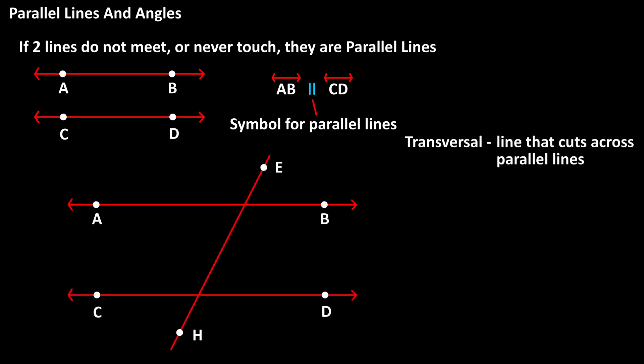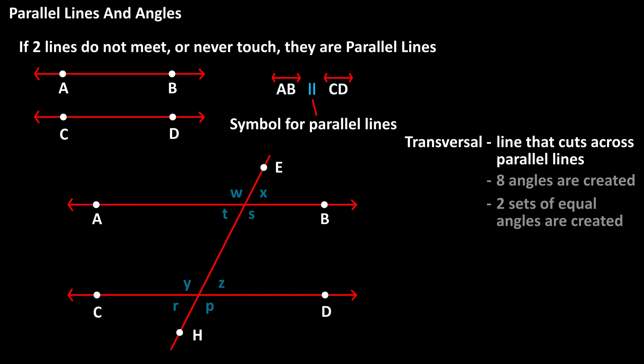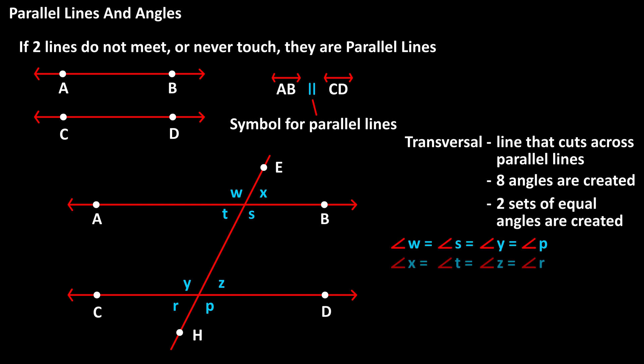And when this happens, eight angles are created and two sets of equal angles are created. In this diagram, angles W, S, Y, and P are all equal, and angles X, T, Z, and R are also all equal.